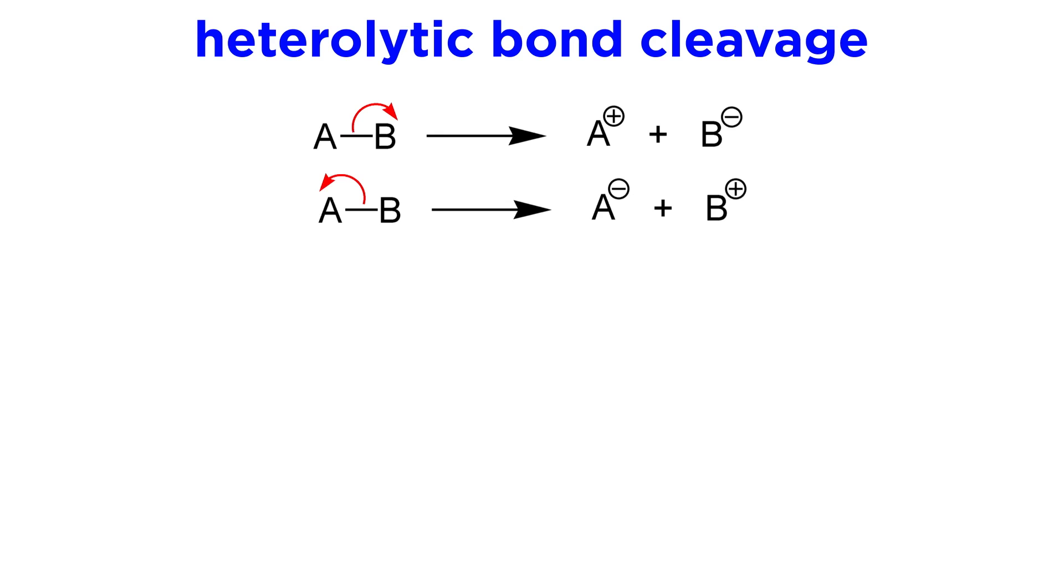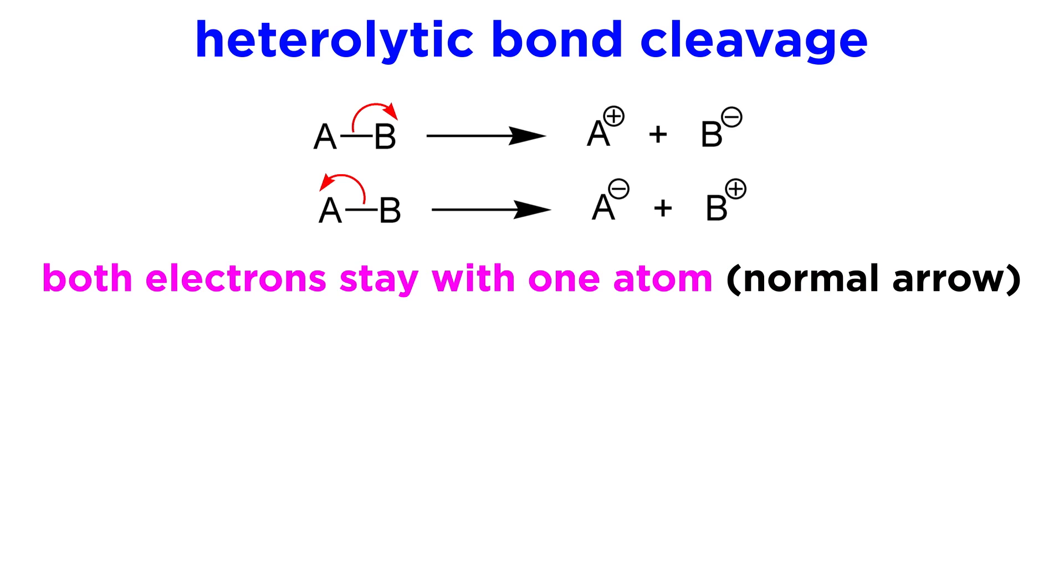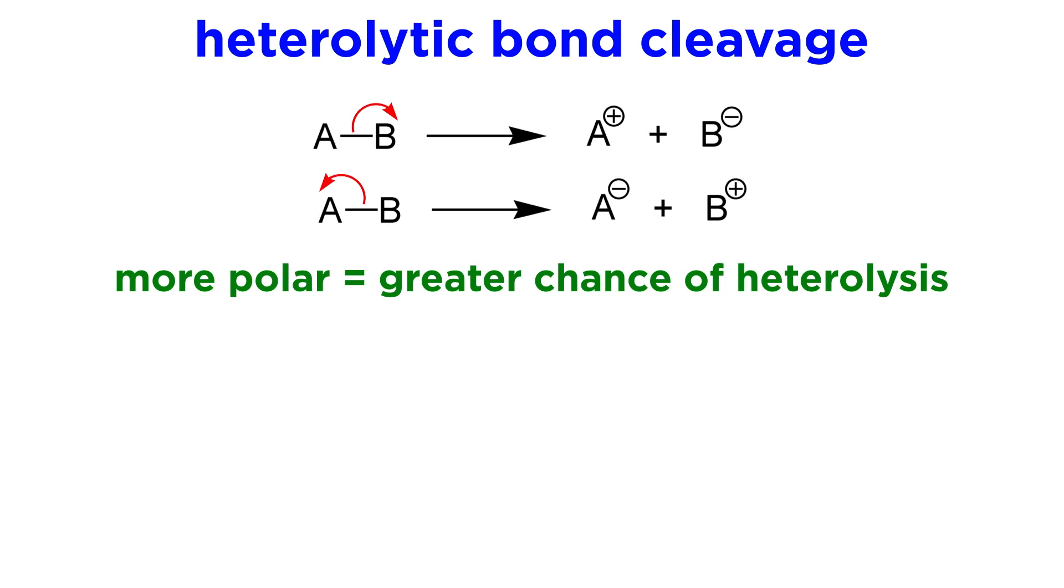Most of the time bonds break heterolytically, meaning both of the electrons in a bond stay with one of the two atoms participating in the bond. In such a case we would use a normal curved arrow, which denotes the motion of two electrons, and it will go from the bond itself, which is the electron density, to the atom that is keeping the electrons, resulting in a cation and an anion. The more polar a bond, the more likely it is for heterolysis to occur.